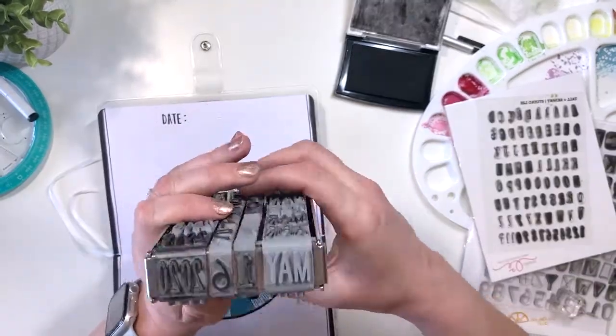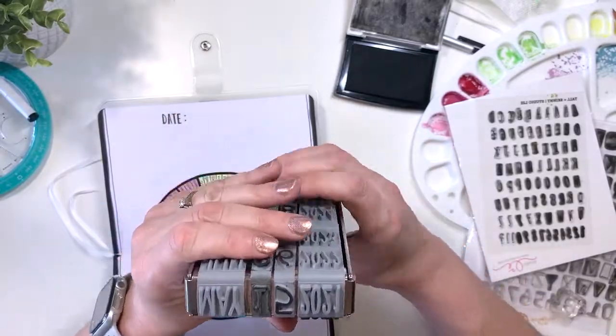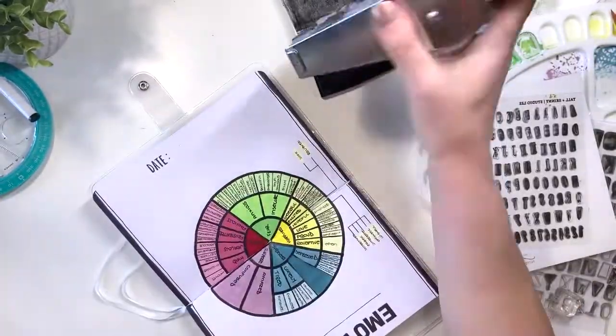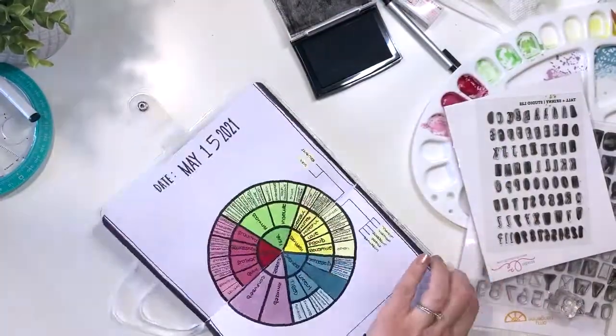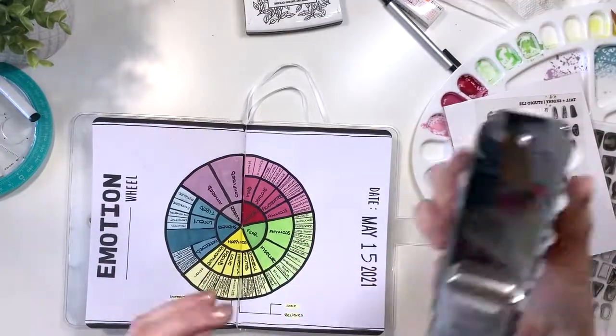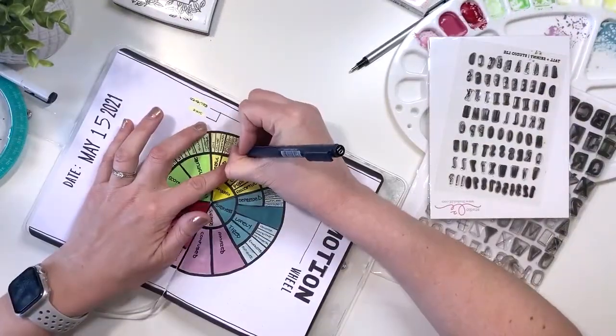And this guy is my favorite. Whenever I get to rip this one out, I get so happy. It's my Studio Calico mega date stamp. It is so much fun. I was so happy to finally get to use it in this journal.